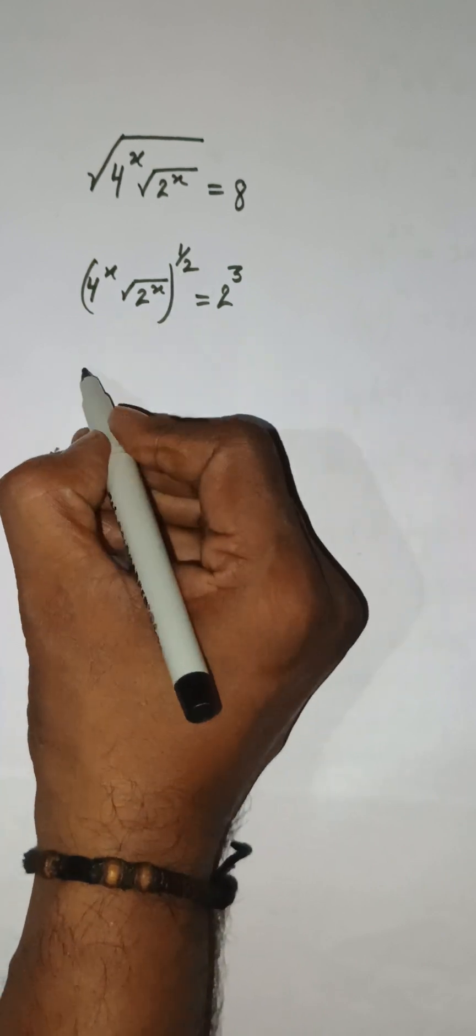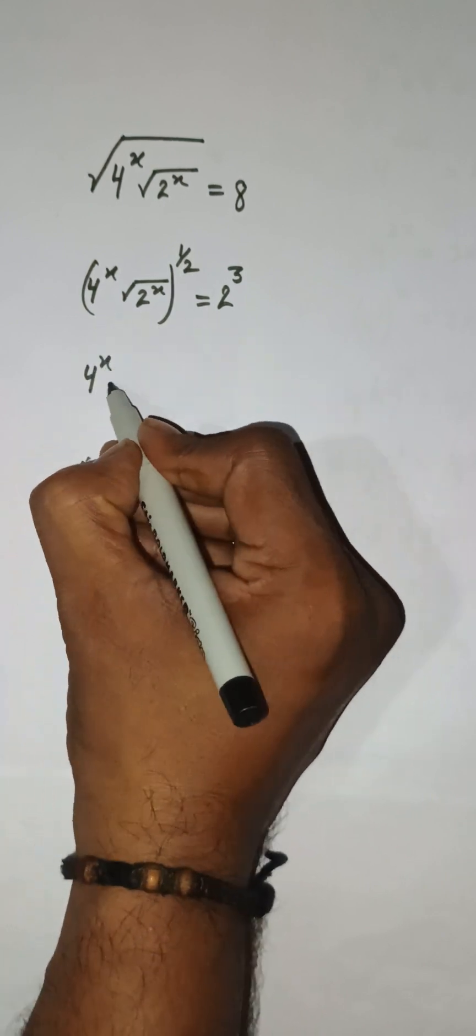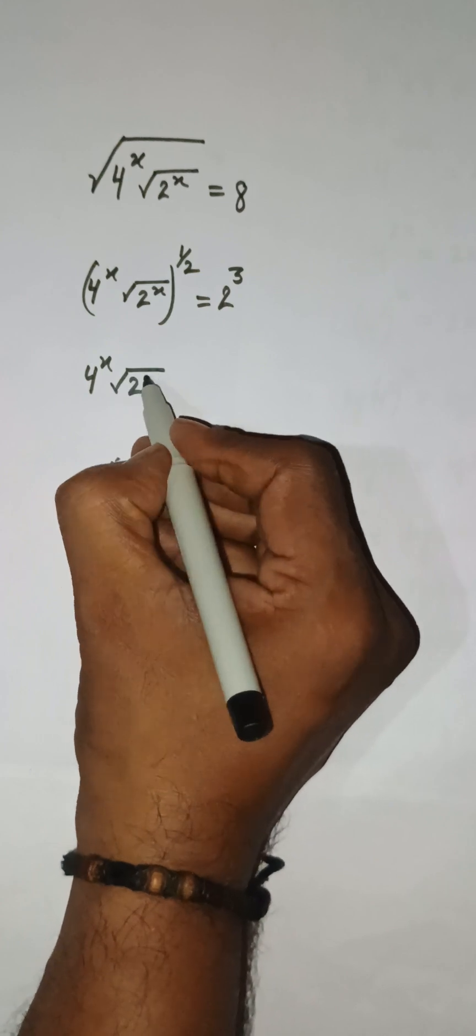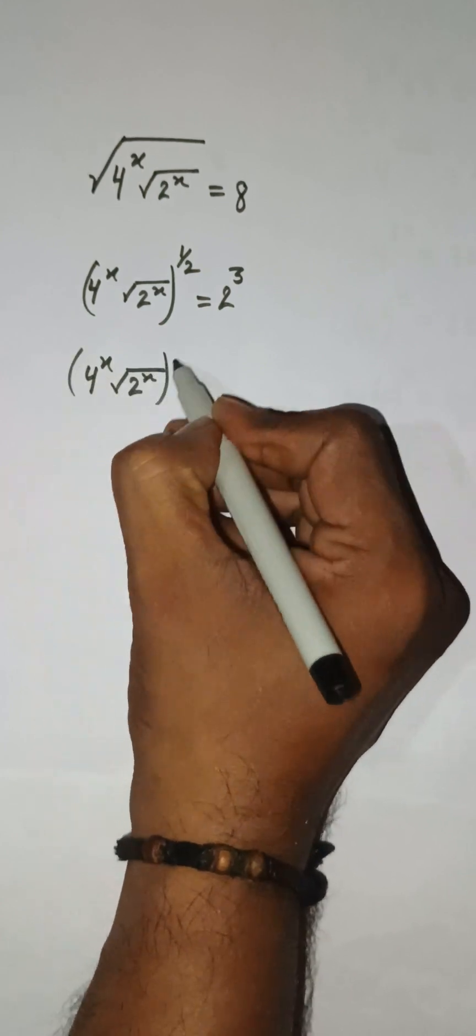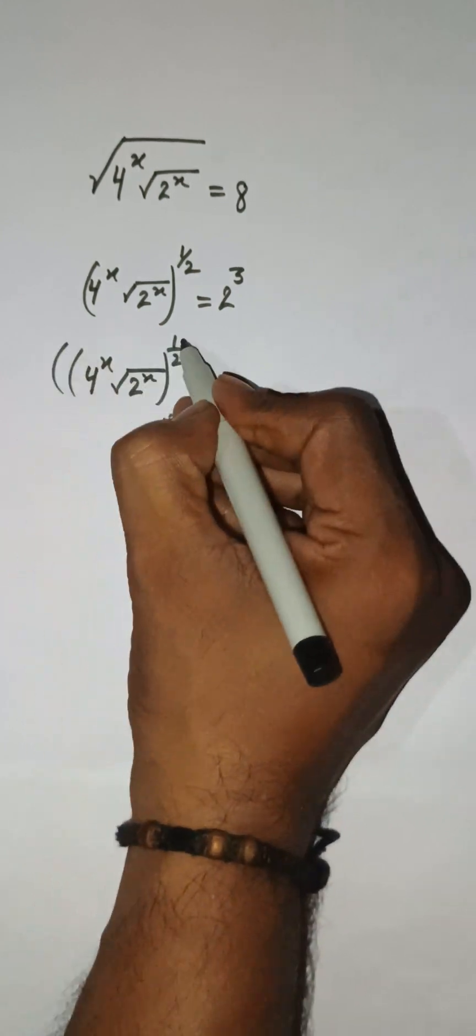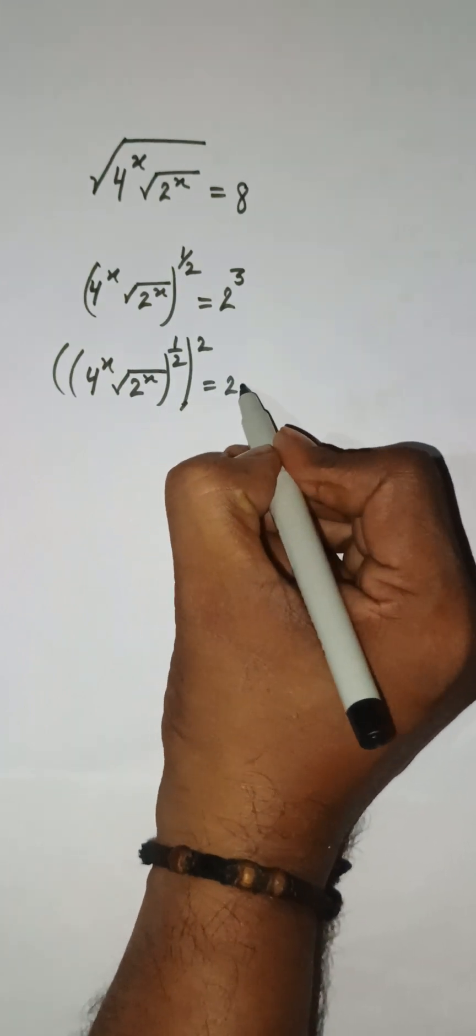So I am putting a square on both sides. We have 4 to the power x, then the square root of 2 to the power x, and here 1 by 2, I am raising power 2 on both sides.